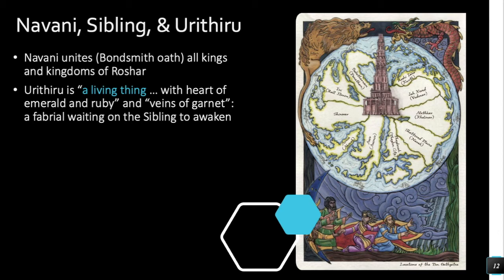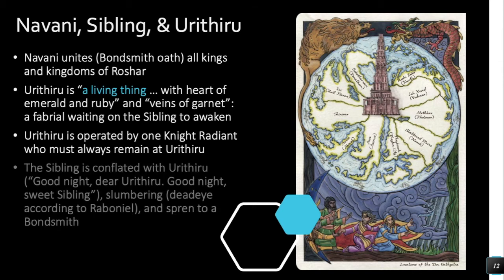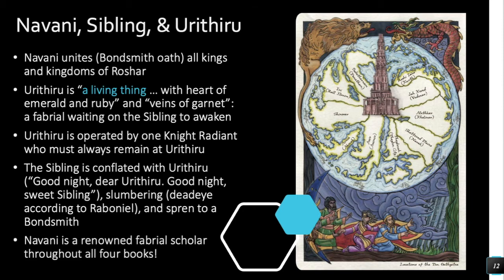The Sibling is constantly conflated with Urithiru — 'Good night, dear Urithiru, good night, sweet Sibling.' Both Urithiru and the Sibling are said to be slumbering and like a dead eye according to Raboniel. We know from the Stormfather that the Sibling is a spren bonded to one of the Bondsmiths. All of these things together really point to Navani being the Bondsmith who bonds the Sibling and rules over Urithiru.